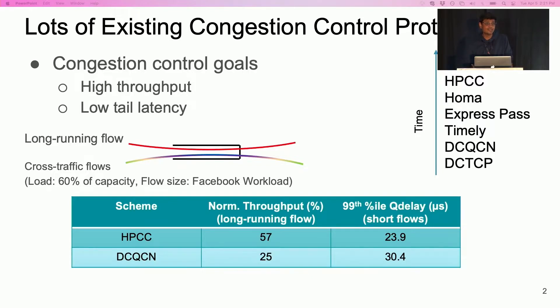With HPCC, a state-of-the-art data center protocol, the long-running flow achieves only 57% of the ideal throughput. The short flows incur 24 microseconds of queuing at the tail. Performance is even worse with older schemes such as DCTCP.